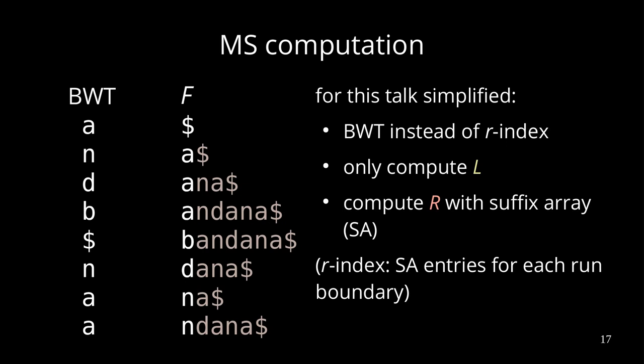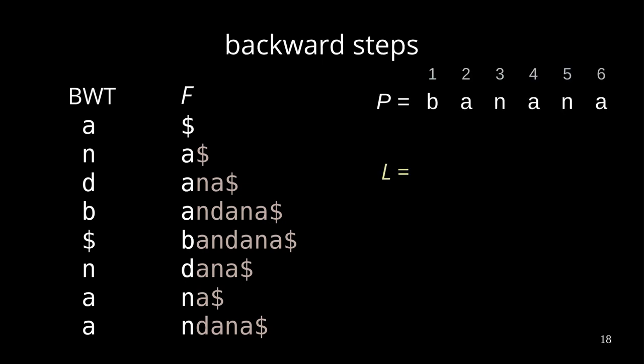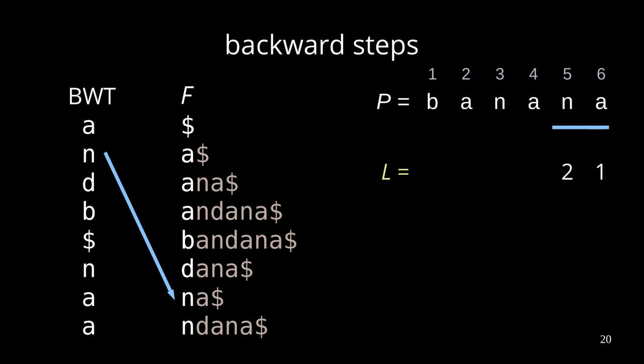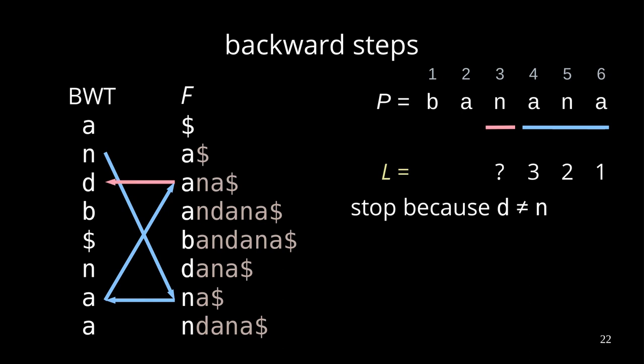What we do is: first we do classic backward search steps like in the FM-index. For computing L, we start with the rightmost character in P, which is 'a', and we take in F the a-interval, which has length 3 because there are three a's in the text. So the answer is already 1, because 'a' appears. Then the next character is 'n', and we take in this a-interval the first 'n' and continue. This is a backward search step. We end up at an 'a', which is good, because we want to have an 'a'. So whenever we do a backward search and succeed, we can increment L by one. Next we want to do another backward search step, but this time we expected to have an 'n', but we end up with a 'd'.